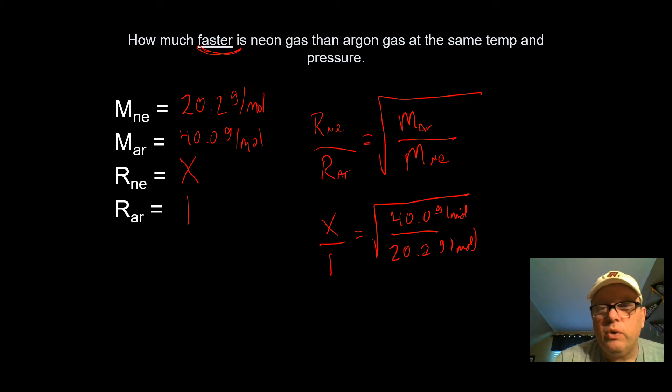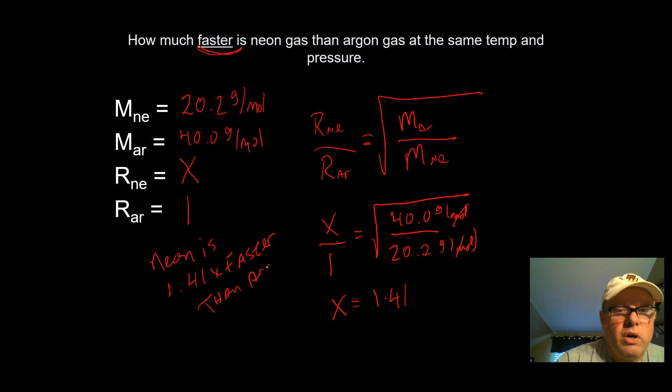And notice that these two units are going to cancel because we're dividing them by each other and there is no unit on this thing. We're literally just going to be able to say how much faster it is. So we solve for X and I got an X value here of 1.41. So what that means now is that neon is 1.41 times faster than argon. And that's what we can say in the end is how much faster is neon than argon. And that is one of the ways that we will be using and the most major way we'll be using Graham's Law.